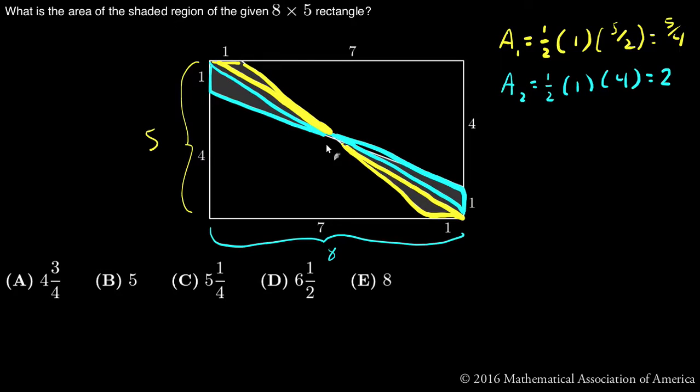And since I have two of each of those rectangles, I will do the overall area equals two times the first area plus two times the second area.